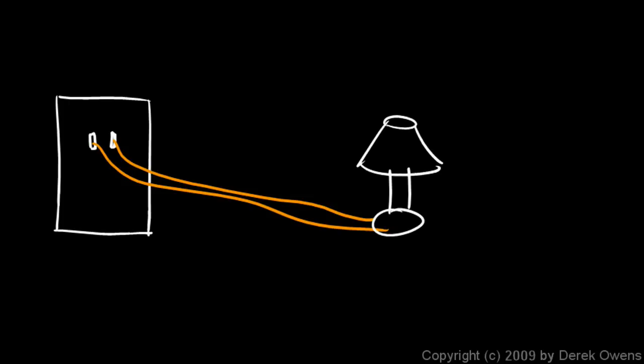And so when you plug something in, say you plug in a lamp, there's one wire running from one side and one running to the other, even though they're both wrapped up in the same cord. And they run over here to the lamp, and you have a light bulb inside the lamp, and the electricity runs up here and goes through the light bulb.